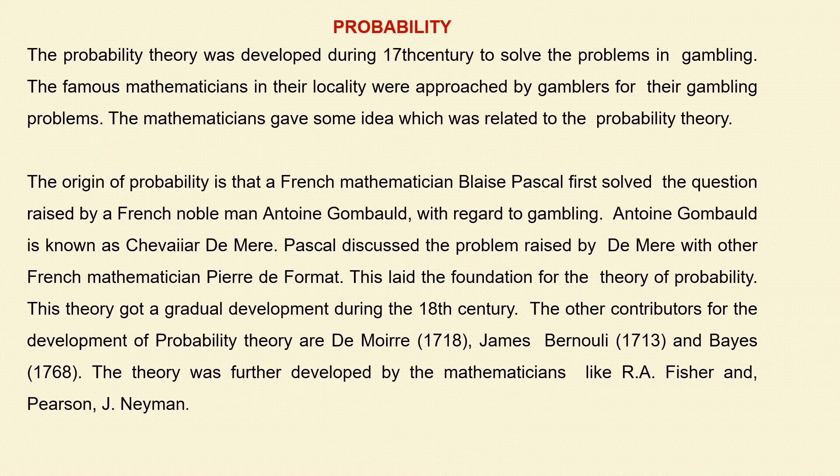To study about probability, let us look at some introductory aspects — how it was developed. The probability theory was developed during the 17th century to solve problems in gambling. Gambling was a major activity in olden days since there was no other entertainment like cinema or TV. Hence people were concentrated in gambling, particularly kings who had more spare time.